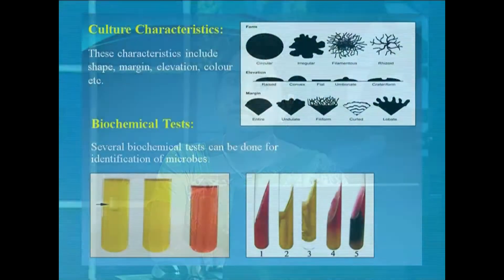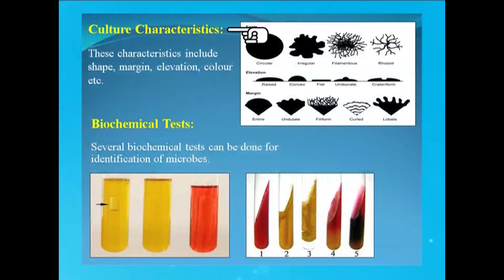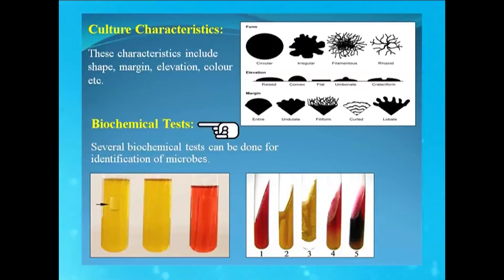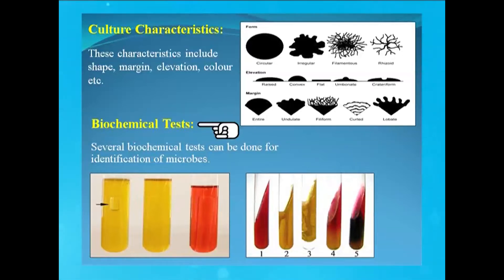One can also identify a microbe by observing its culture characteristics — that is, the shape, margin, elevation, color, etc. of the colony formed by the microbe on a media. There are certain biochemical tests present for identification purposes; for example, the carbohydrate fermentation test or IMViC test, which are extensively used for the identification of microbes.